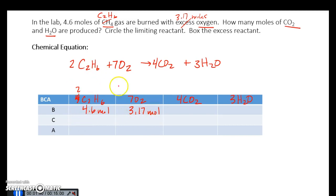So I have to figure out which one of these is going to run out first. So the way that I do it is I look at my equation and I see that for every 2 moles of C2H6, I need 7 moles of O2. That's more than triple the amount of O2 that I need. So when I have 4.6 and 3.17, is 3.17 triple the amount of 4.6? And the answer is no. I have too little of it.